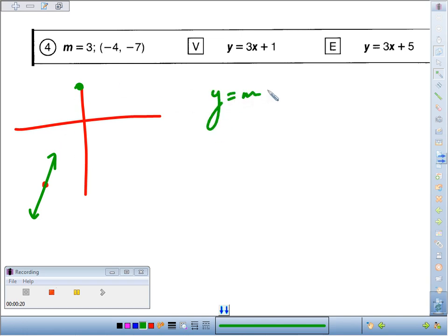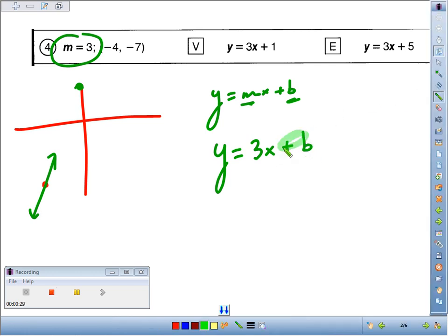The key is, if it's a slope-intercept equation, you need two things: the slope and the y-intercept. They gave us the slope, so fill it in. y equals 3x plus something. We're going to try to find this something.